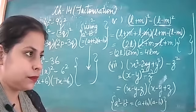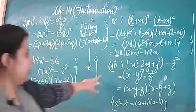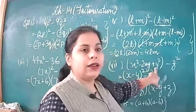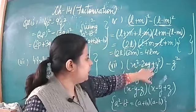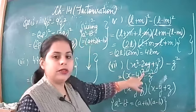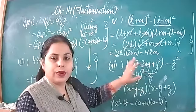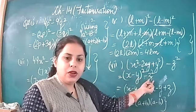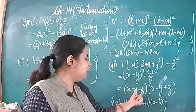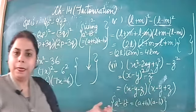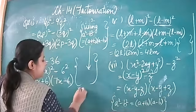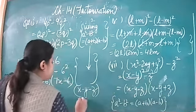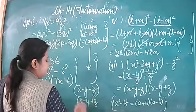Mankirat asked to repeat the seventh part. x squared minus 2xy plus y squared — here the identity a squared plus b squared minus 2ab equals (a minus b) whole square is applied, giving (x minus y) whole square. Then we have square of first term minus square of second term z squared. That gives (x minus y minus z)(x minus y plus z).